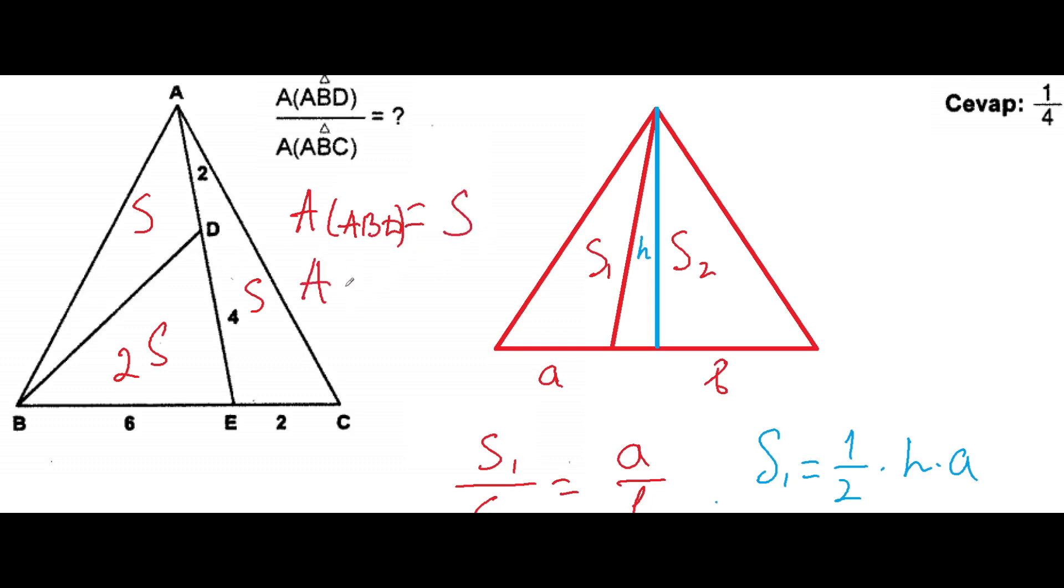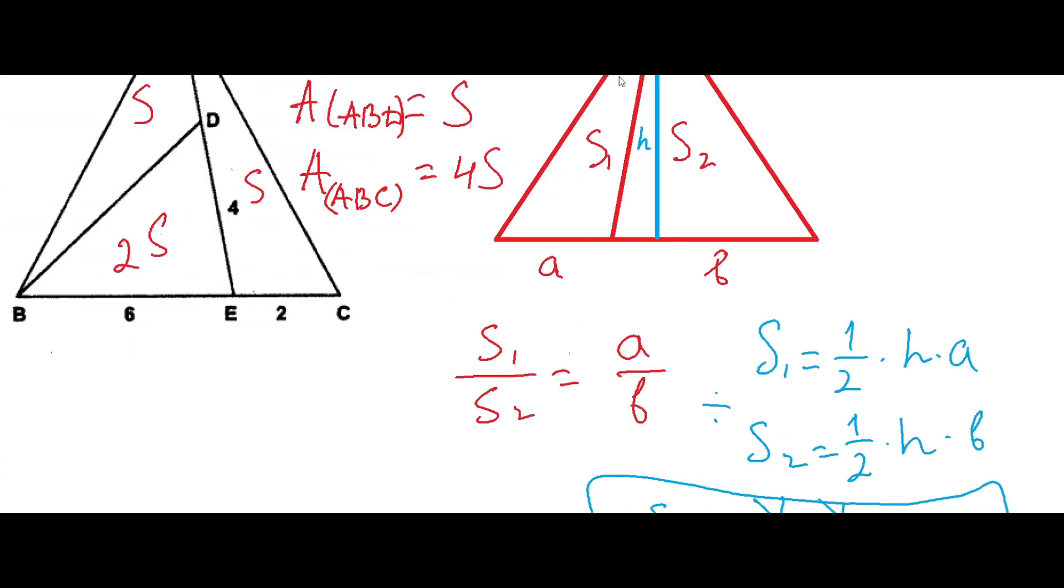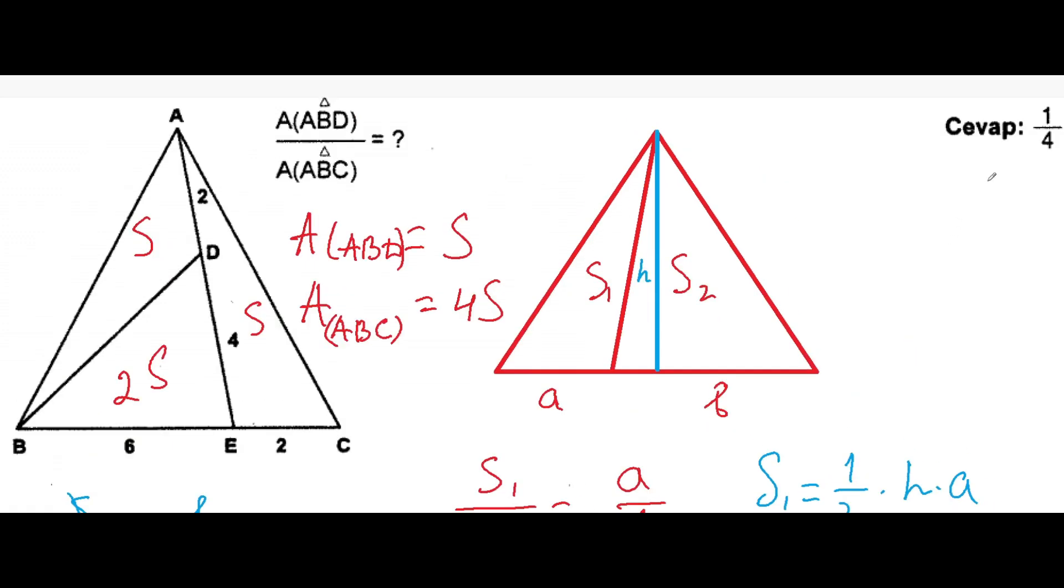And the area of ABC, we can add up these areas and we can get 4S. And we can now divide by the other, and S over 4S, we can say that this answer is correct.